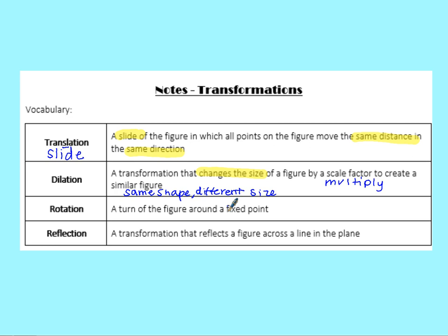Our next type of transformation is rotation — that's a turn of the figure around a fixed point. 'Turn' is the key word. Rotation has a 't' in it and 'turn' starts with 't' — that might help you remember it.